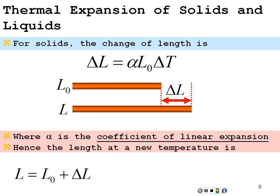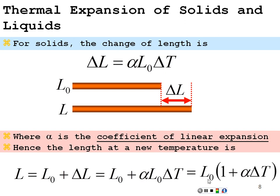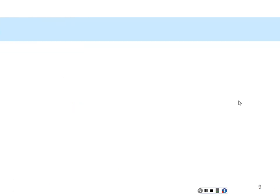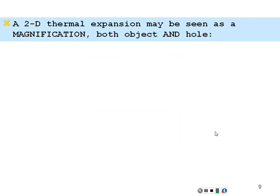So our new length is going to be our original length L-naught plus this change in length: L-naught plus alpha times L-naught times delta T, which we can write as L-naught times (1 plus alpha delta T). Alpha in general is going to be a relatively small number. The change in T is just a change in temperature, most likely either in Kelvin or Celsius — it won't matter which since you're dealing with a change in temperature.